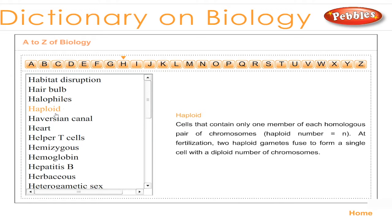Haploid: cells that contain only one member of each homologous pair of chromosomes. The haploid number is equal to N. At fertilization, two haploid gametes fuse to form a single cell with a diploid number of chromosomes.